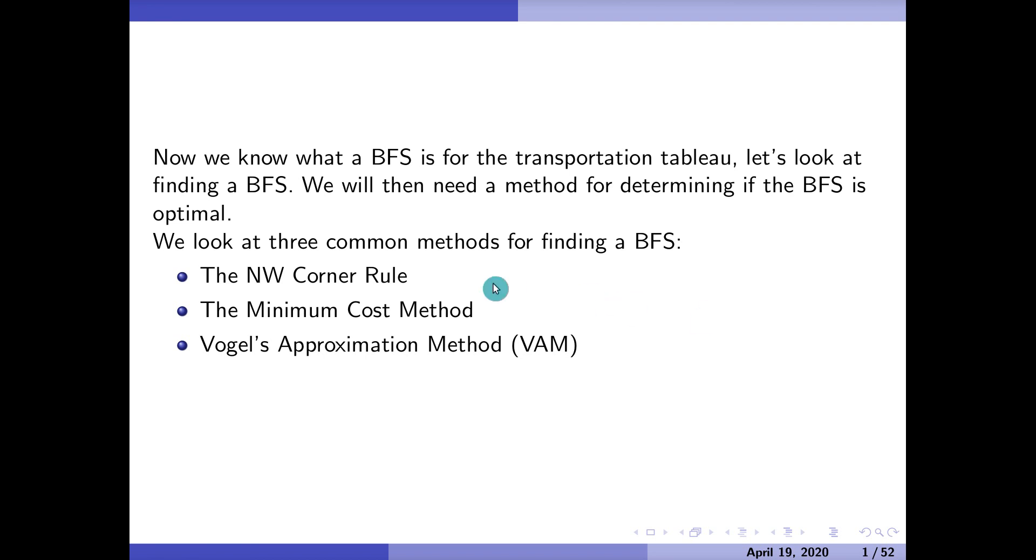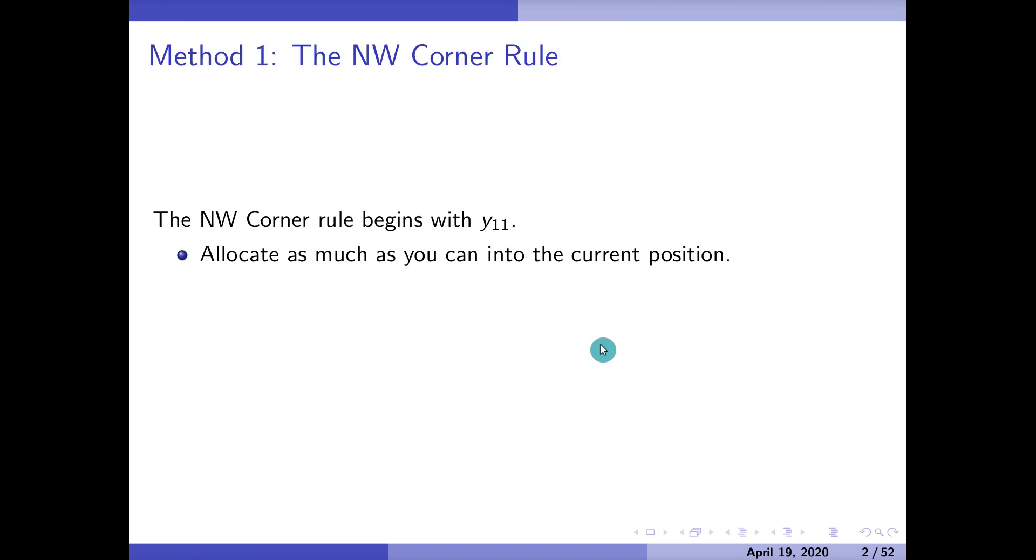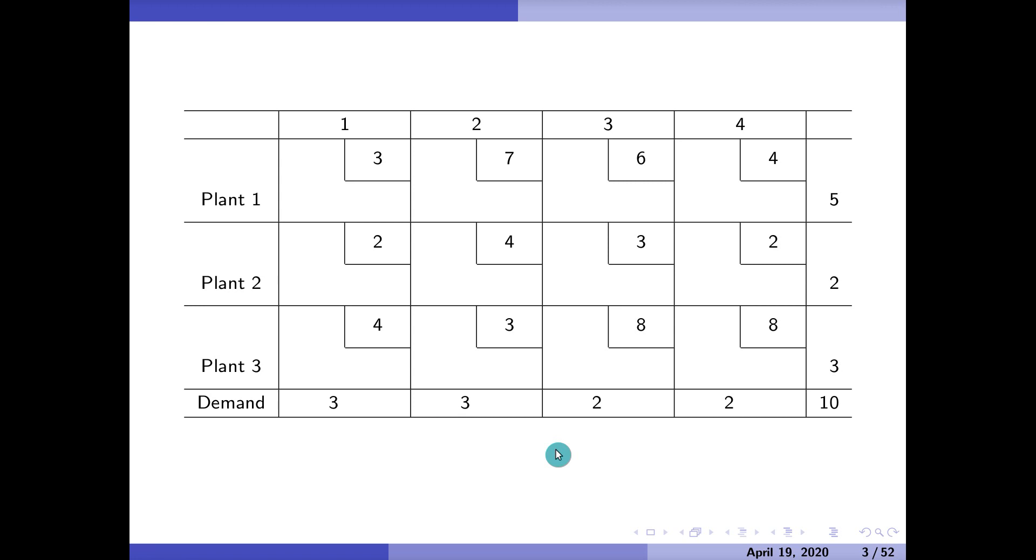And then we're going to have a method later on for making that BFS even better. So our first BFS will be constructed using the northwest corner rule, and then we'll have something called the minimum cost method. And Vogel's approximation method will round it out. So the northwest corner rule, you start off in the upper left position. You stick as much as you can into that position, which should deplete the supply in the row or the column. Move the column to the right if there's any supply remaining. No supply remaining, remove one row down. Let's see how this works.